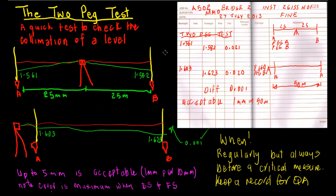Hello, Mario here. The two peg test - this is a fairly quick test that most people use when they're using a level, be it a spirit level, a dumpy level, digital level, or an automatic level.